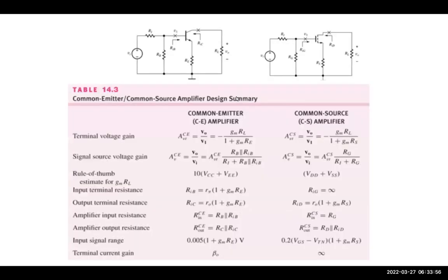We'll first go over the single-stage amplifiers, which was the topic of 301. There was a common emitter amplifier and a common source amplifier. The common emitter amplifier is a BJT amplifier where the input is from the base and the output is from the collector.